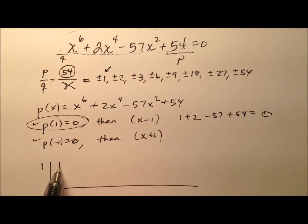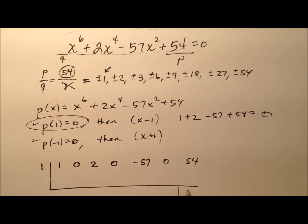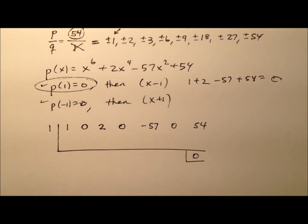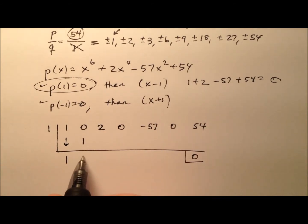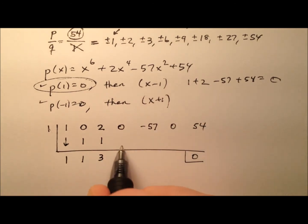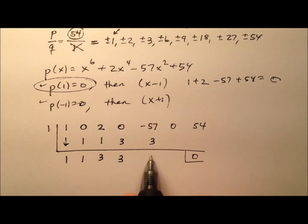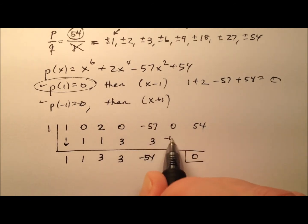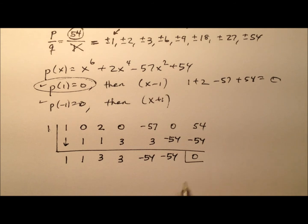For x to the 6th, I have no x to the 5th terms, a 2 for my x to the 4th, no x cubed terms, a negative 57 for my x squared, no x's, and 54. I know it works so my remainder should be 0. Bring the 1 down. 1 times 1 is 1; 0 plus 1 is 1. 1 times 1 is 1; 2 plus 1 is 3. 1 times 3 is 3; 0 plus 3 is 3. 1 times 3 is 3. And then we get negative 54, with our remainder of 0. So this works.